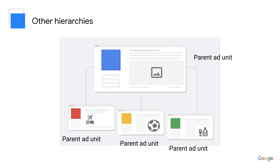However, your site might have a different structure, like this news publisher who has subsections on travel, sports and entertainment. In that case, you might want to have four different parent-level ad units dedicated to each section so that you can target each subsection with different types of ads relevant to that content.